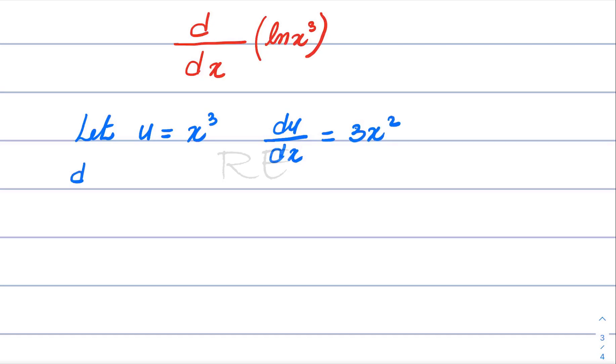Now, the derivative of ln u is equal to 1 over u times du/dx. Since ln u is a composite function,